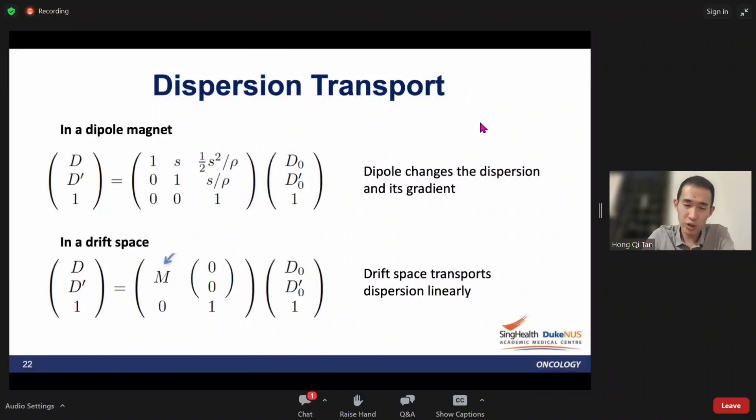The dispersion can also be transported using a matrix. In a dipole, it will change the dispersion and the dispersion gradient. But what's important is here: in a drift space, when there's no magnetic component, the dispersion is only transported linearly, which means the gradient will always remain constant. With this knowledge, we actually propose a way to measure dispersion in a clinic.